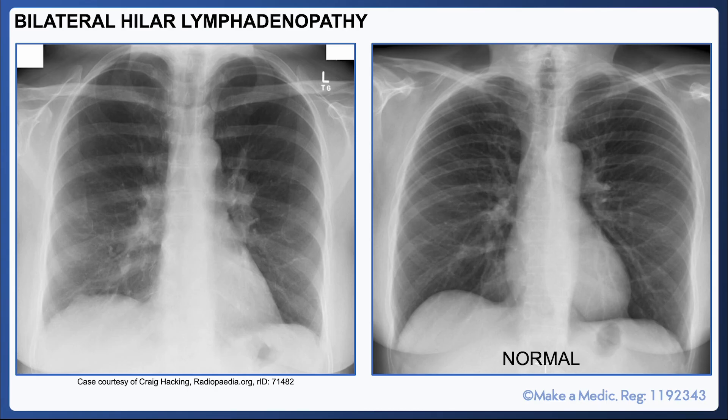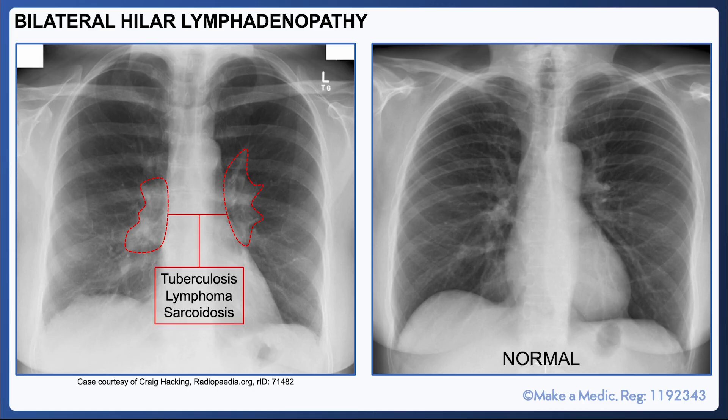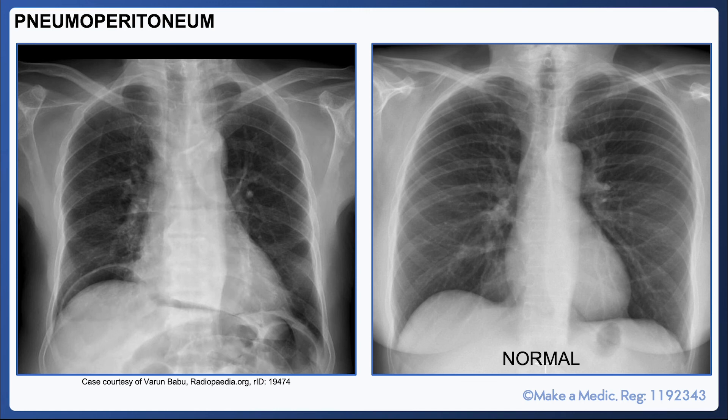Bilateral hilar lymphadenopathy refers to enlargement of the hilar lymph nodes. When you inspect the hilum, it looks much bulkier and more obvious than it would on normal chest X-rays. Causes include tuberculosis, lymphoma, and sarcoidosis.